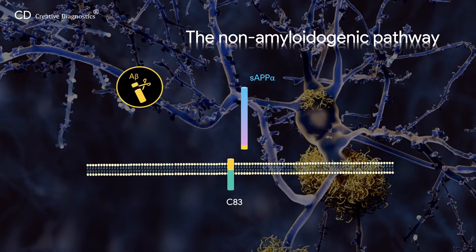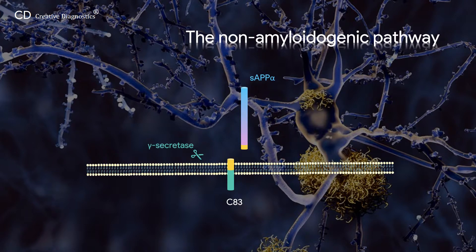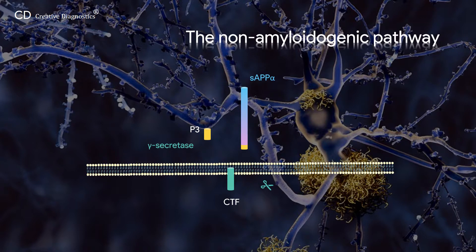Of note, the C83 membrane fragment can be subsequently cleaved by gamma-secretase to produce a short fragment called P3 peptide and a C-terminal fragment. To date, the P3 peptide is believed to be pathologically irrelevant.